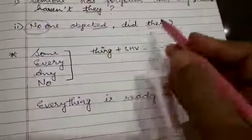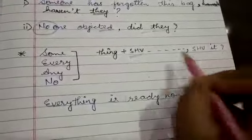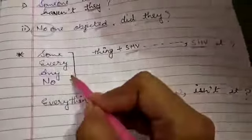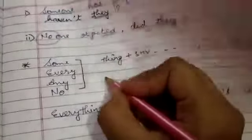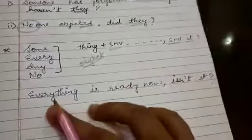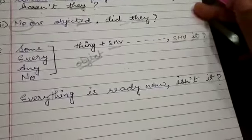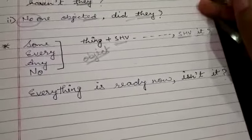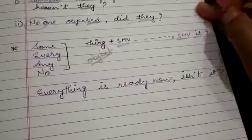Students, for words like 'something,' 'everything,' 'anything,' and 'nothing,' we use the singular helping verb. When we add a question tag, we write the same helping verb but use 'it' as the subject pronoun, because these words represent objects. Example: 'Everything is ready now.' Helping verb is 'is.' It's a positive sentence, so we write the negative tag 'isn't.' For 'everything' we use 'it.' Result: Everything is ready now, isn't it? I hope you all have understood.